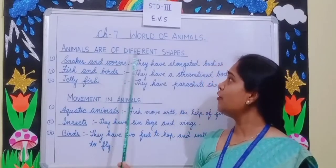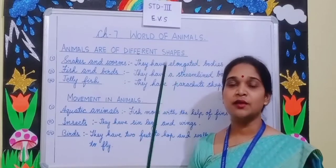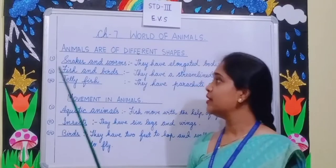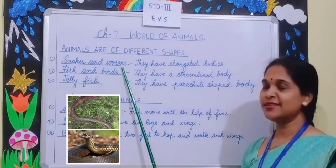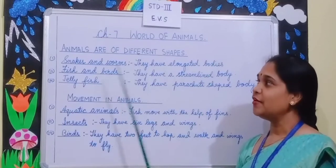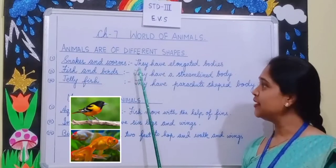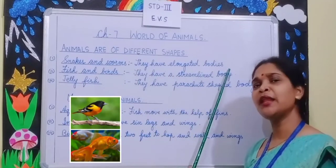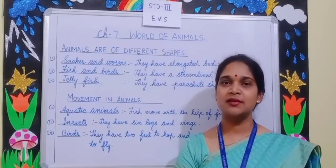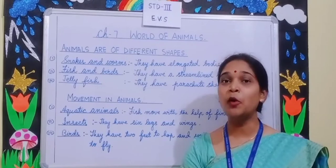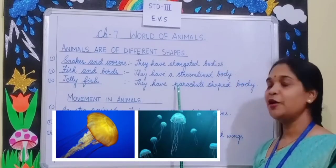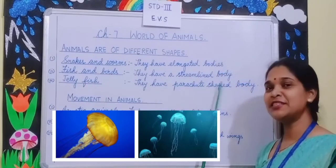Animals are of different shapes. Different animals have different shapes. Snakes and worms have elongated bodies. Fish and birds have a streamlined body. What do you mean by streamlined? Streamlined means boat shaped. Jellyfish have a parachute shaped body.